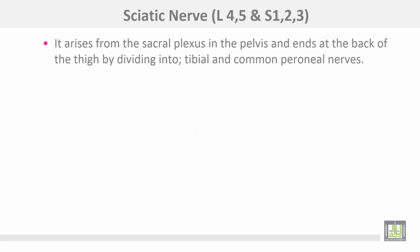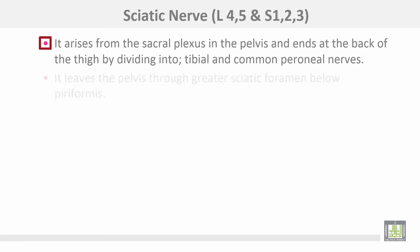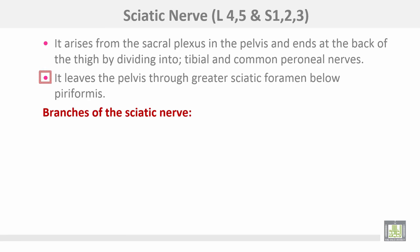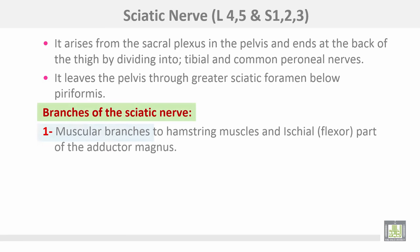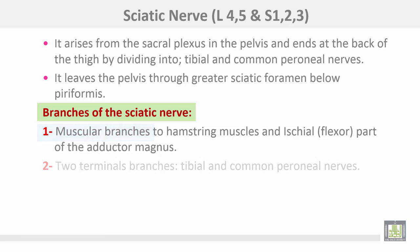The sciatic nerve arises from lumbar 4, 5, sacral 1, 2, and 3. It arises from the sacral plexus in the pelvis and ends at the back of the thigh by dividing into two terminals: the tibial and the common peroneal nerves. It leaves the pelvis through the greater sciatic foramen, below the piriformis muscle. Muscular branches supply the hamstring muscles and the ischial part of the adductor magnus.